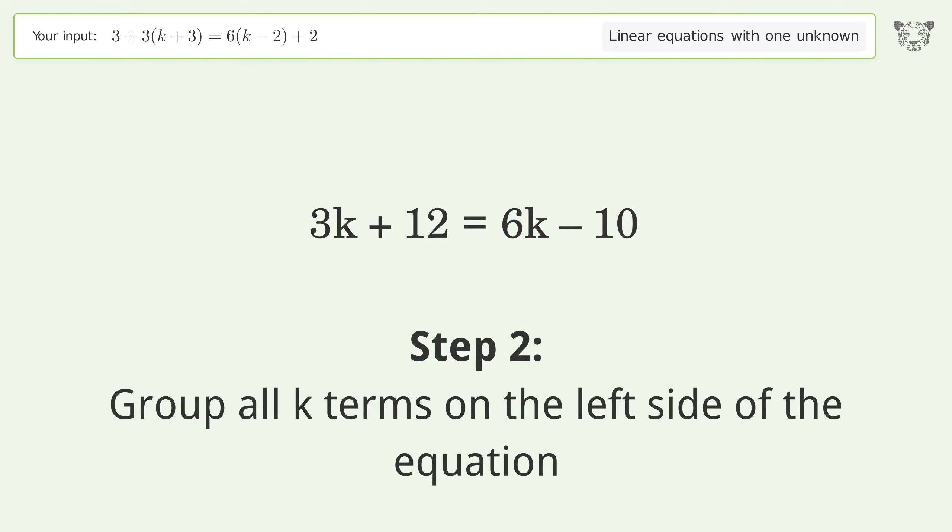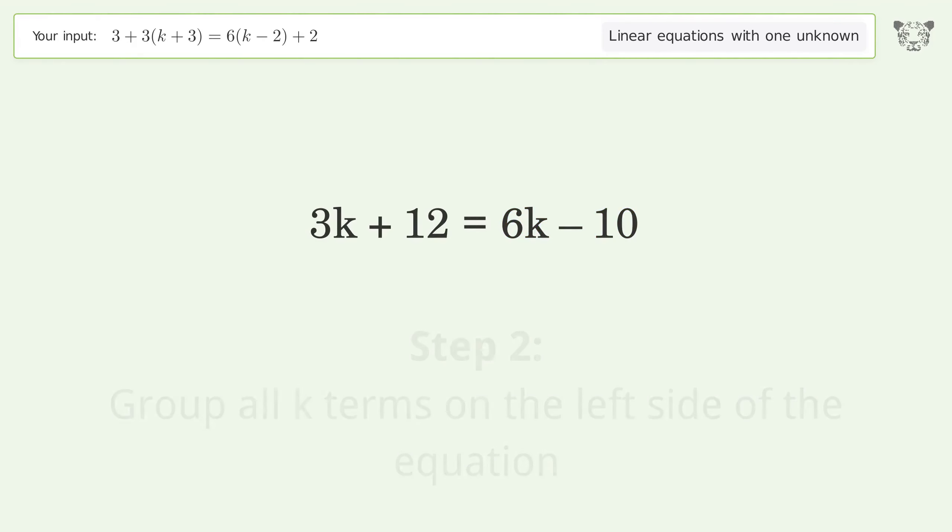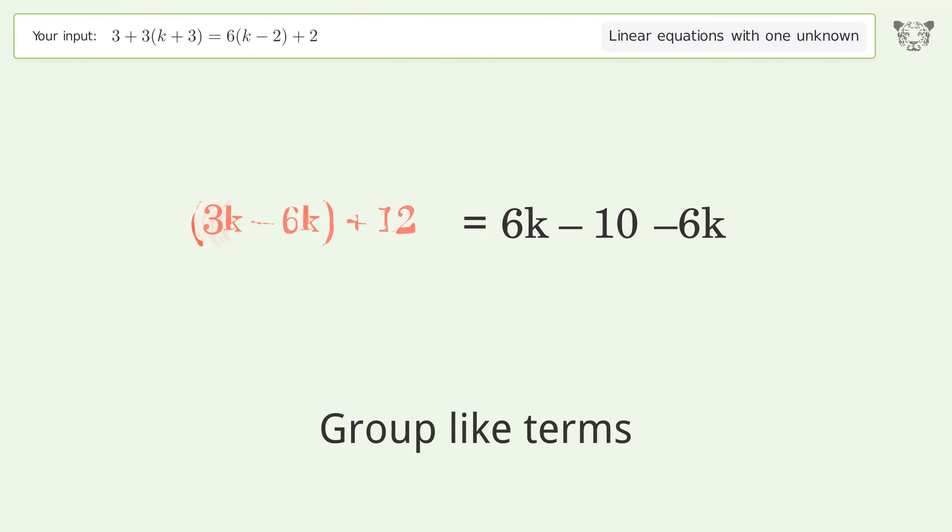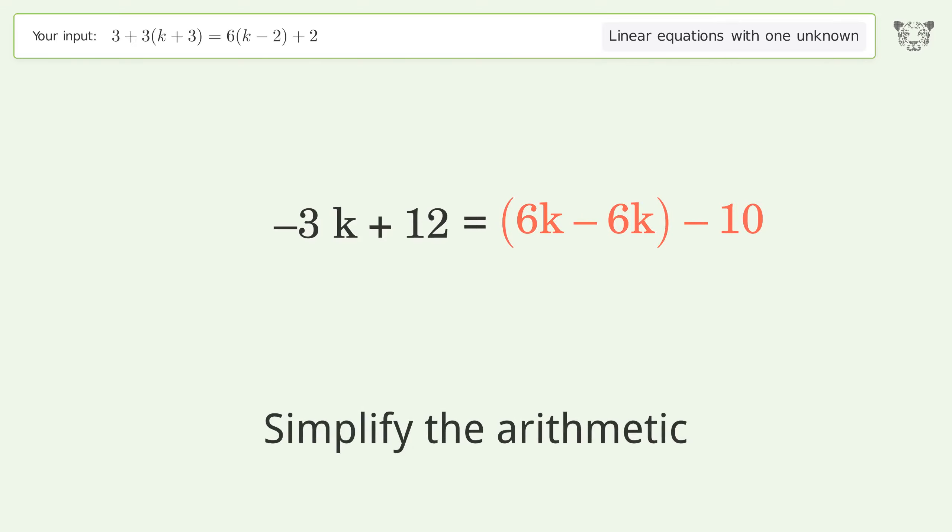Group all k terms on the left side of the equation by subtracting 6k from both sides. Group like terms and simplify the arithmetic.